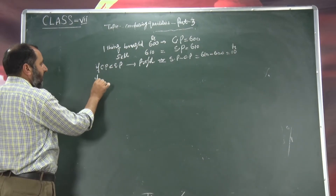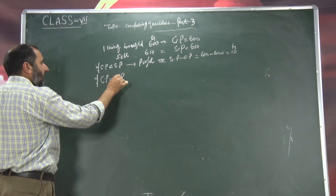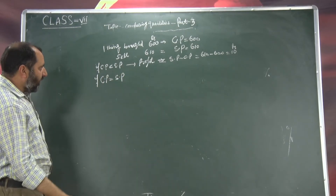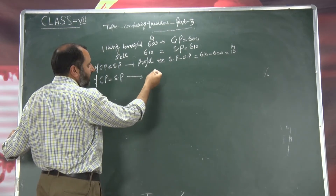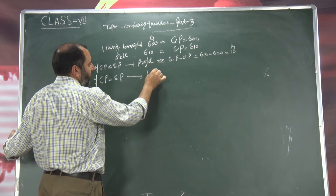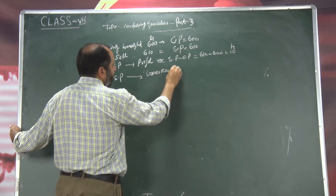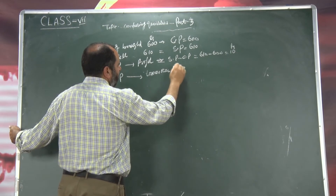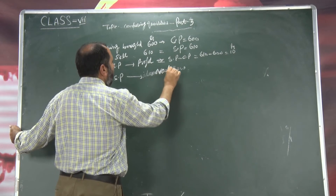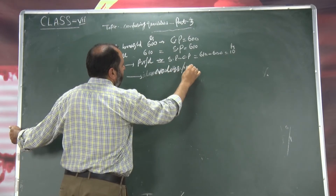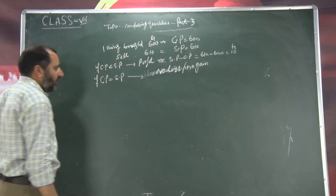Second condition is: if CP is equal to SP — agar jitne mein laya hai cheez, itne mein hi bheej diya, to wahaan neither there is loss nor there is profit. No loss no gain — yahan na loss hua, na gain hua, no profit, no loss.